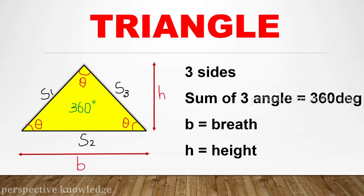A triangle has 3 sides: side 1, side 2, side 3. If we add the 3 angles, the total is 360 degrees.